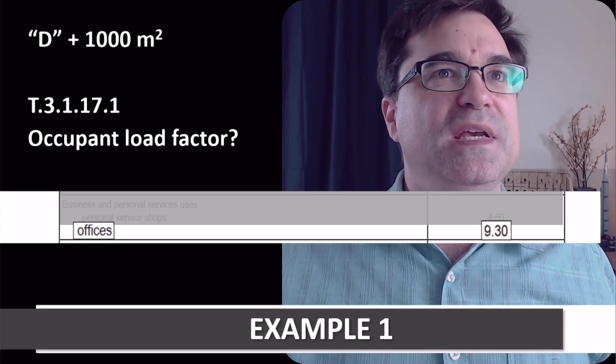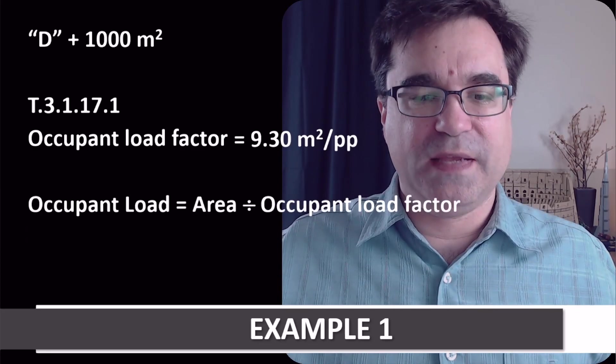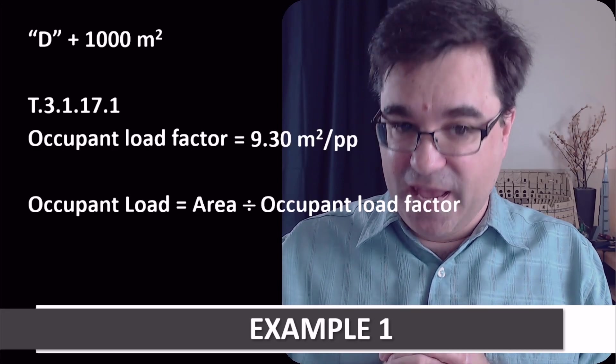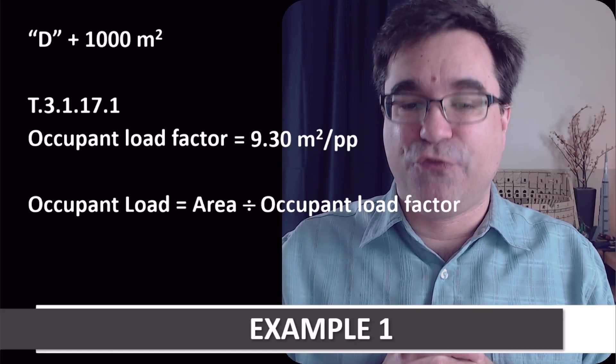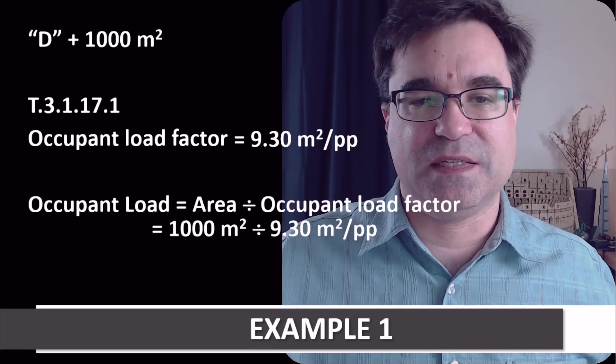So, let me clean things up on the screen a little bit for a moment. To find the occupant load, we must divide the area by the factor we just figured out, right here, this factor right here, like this.